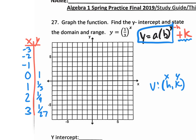Now let's go backwards. If this way it's decaying, then this way it's going to be growing. You could plug in negative 1, which would cause this fraction to flip over and it would become 3 over 1, which would give you just 3. Does that make sense?